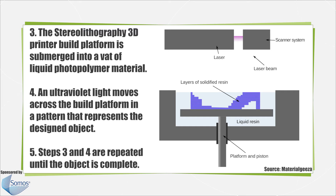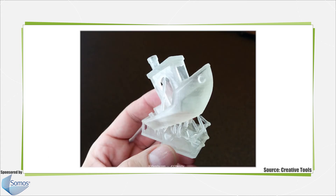This layer is then hardened by a small ultraviolet laser beam tracing the predetermined pattern. Once this first layer is completed, the platform descends to the depth of the next layer, leaving a thin coating of uncured polymer on top of the hardened layer. The laser repeats the process and seamlessly affixes the two layers together. The stereolithography machine continues by sequentially adding each individual layer until the object is finished.